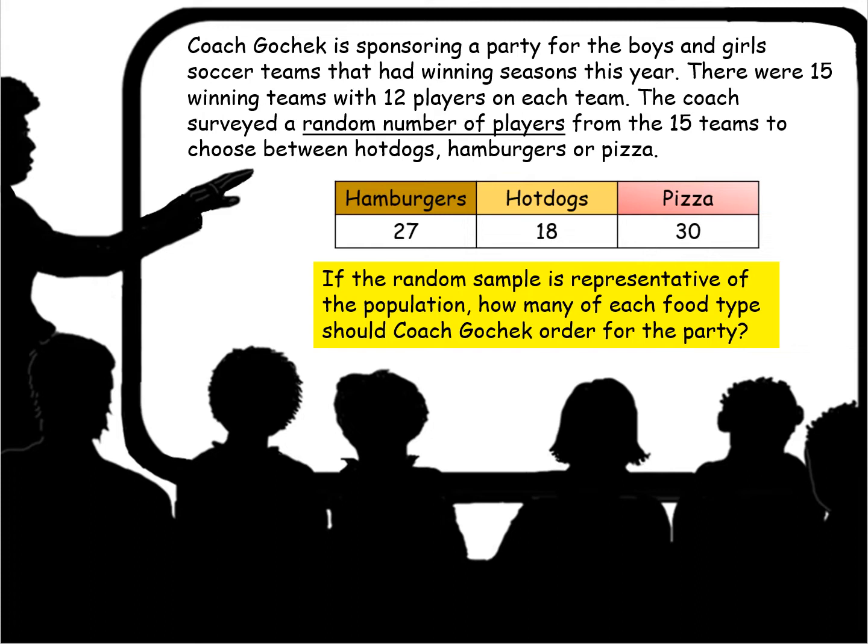So here in this table you see the preference for hamburgers was 27, hot dogs 18, and pizza 30. If the random sample that we show here is representative of the population, how many of each food type should Coach Gocek order for the party?